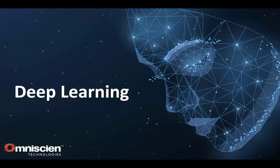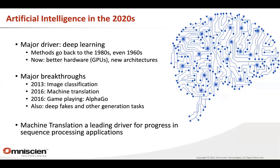Welcome also from me. I'll start with just giving a bit of a sense of the core technology behind machine translation today — deep learning — to give you some idea of what we mean by that. Artificial intelligence in this decade is mainly driven by deep learning. These are methods that actually had a big heyday in the 1980s and even in the 1960s, when people were already working on neural network technology. The main difference now is that we have much better hardware, especially graphical processor units with thousands of threads running in parallel, and new architectures like the transformer model and convolutional neural networks that made a big impact on fields ranging from vision to text to speech.